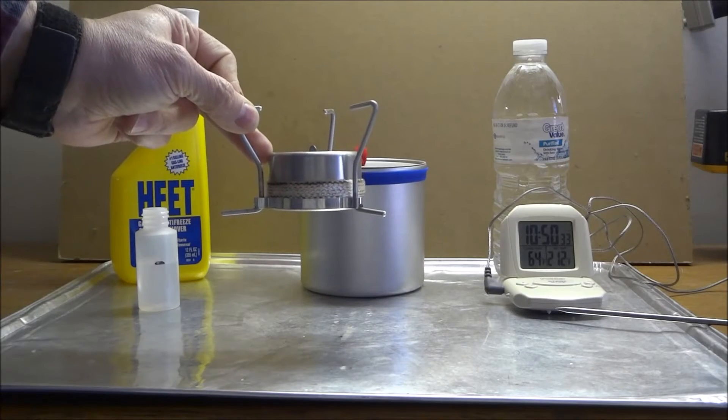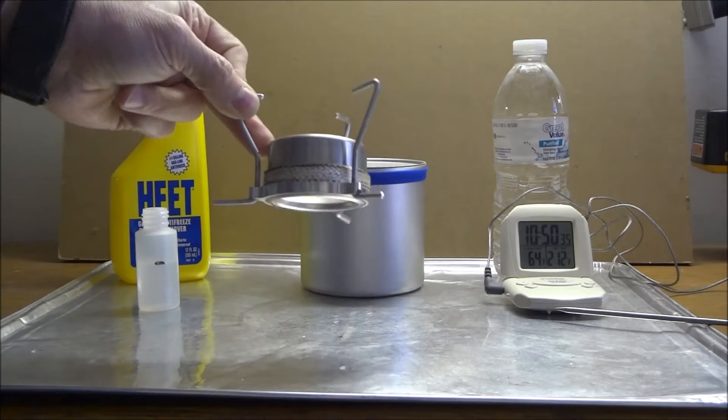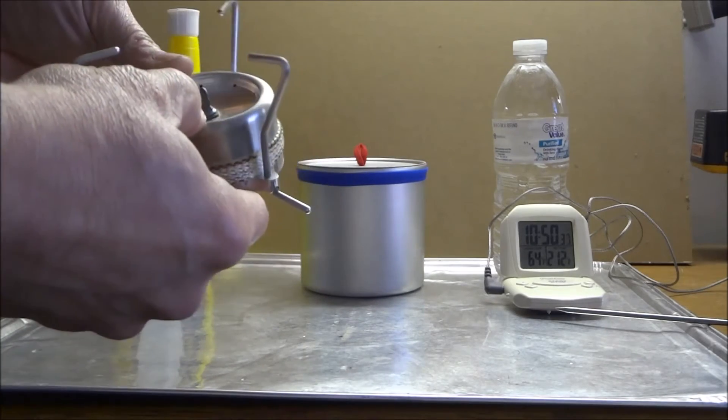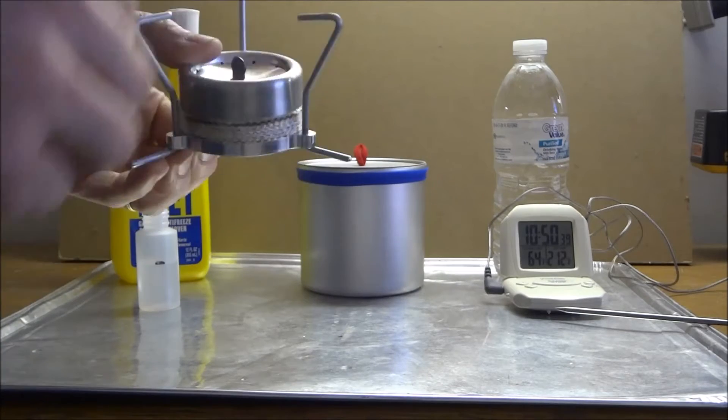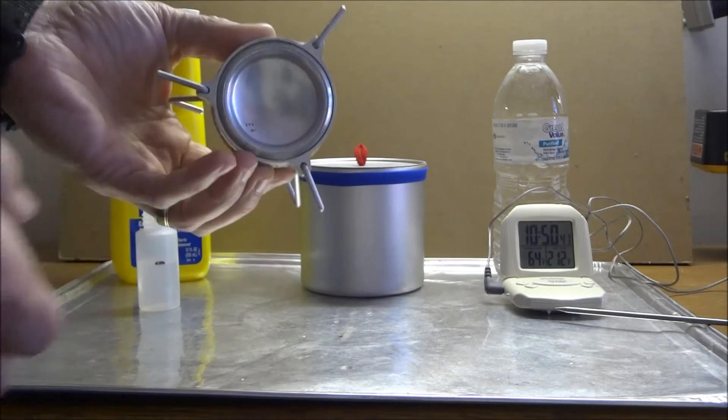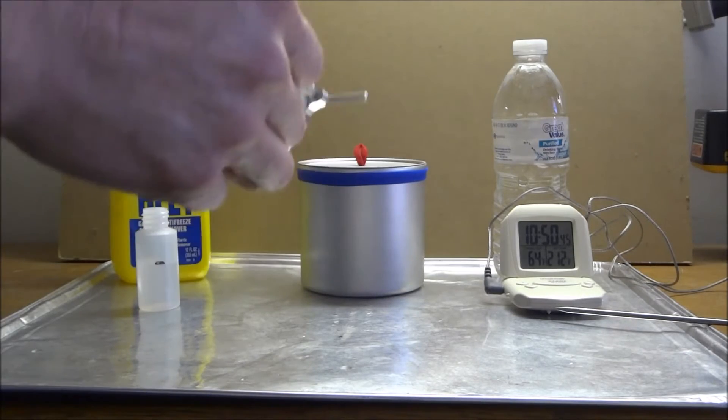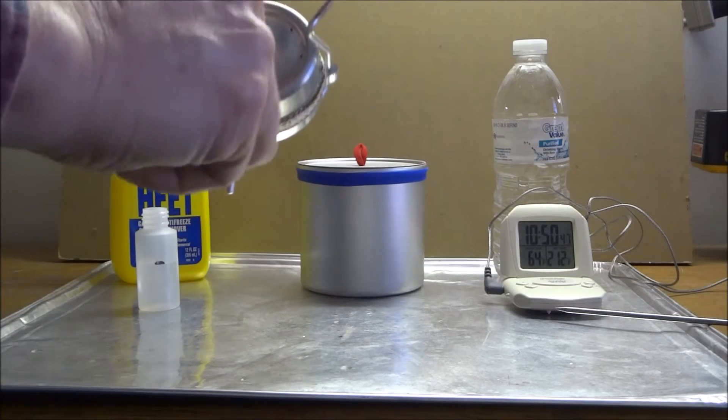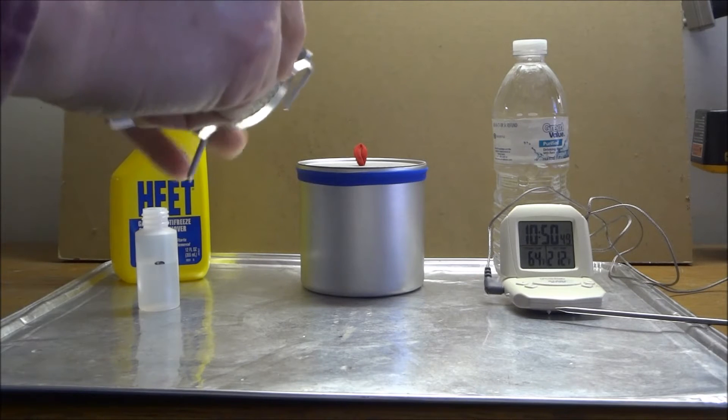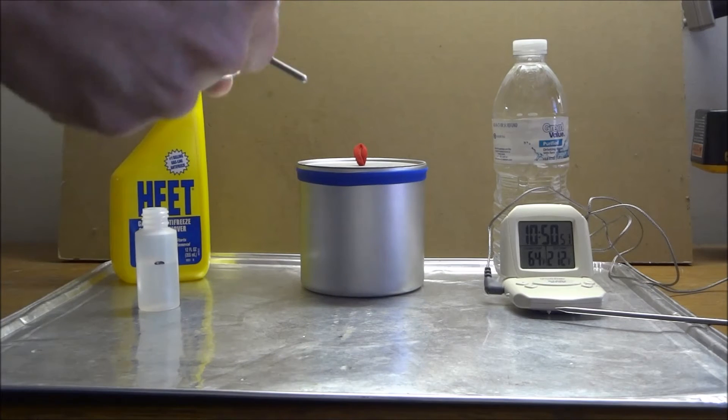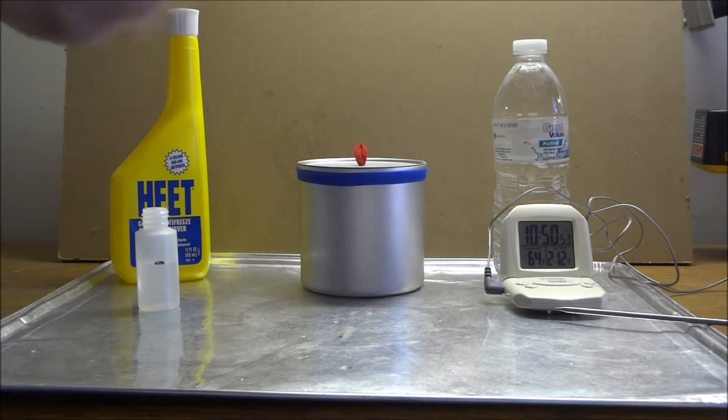This is the IS 2.0, IS for integrated stand. It's basically a penny stove with integrated pot stand. It folds up nice and you can pack it.